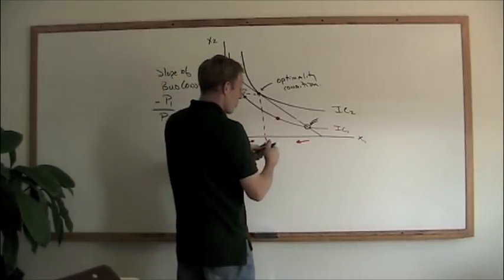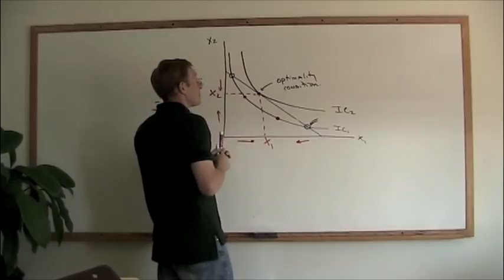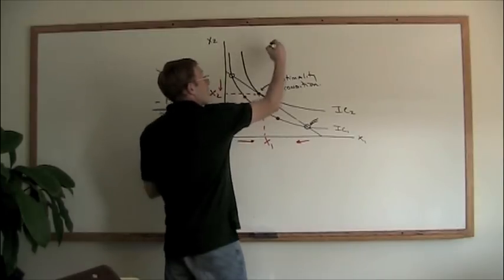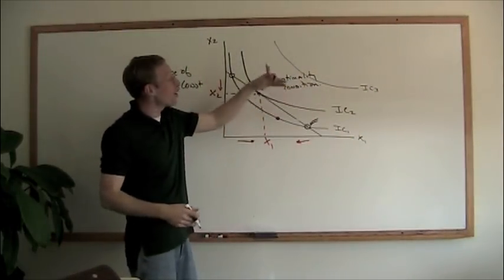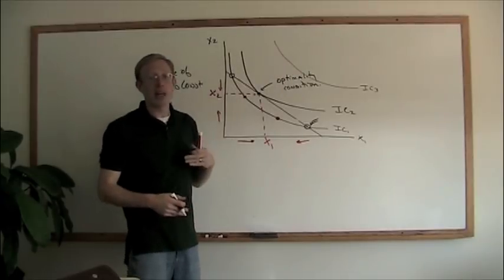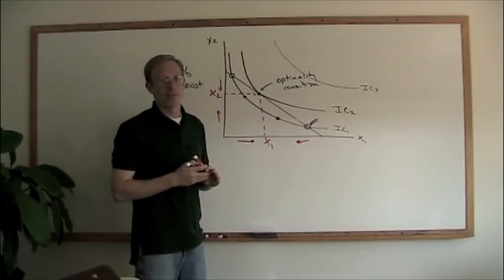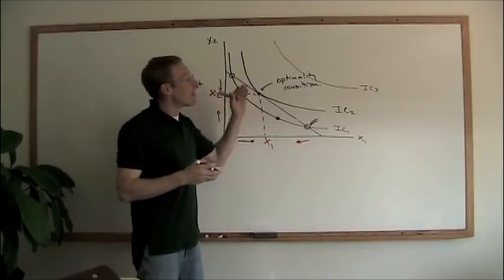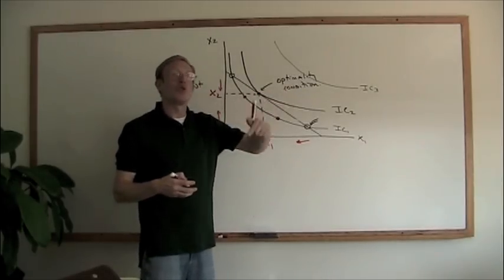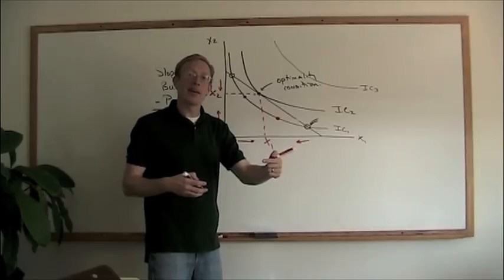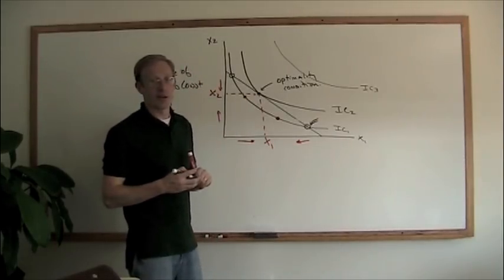If we were to say we want to be on a better indifference curve — out here on indifference curve 3 — that would be wonderful, except you don't have enough money to get there. The optimality condition is all about getting on the highest indifference curve that you can attain within the budget constraint, and that's what we see here.